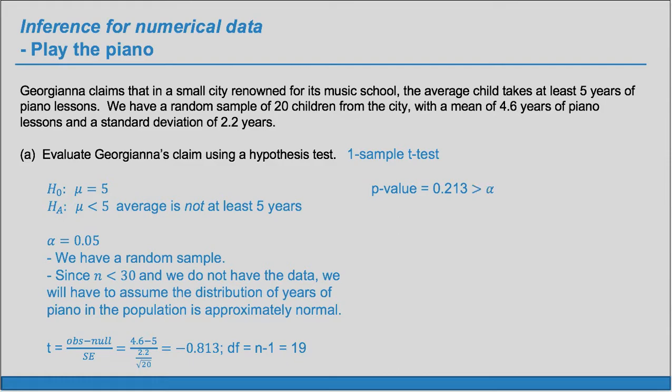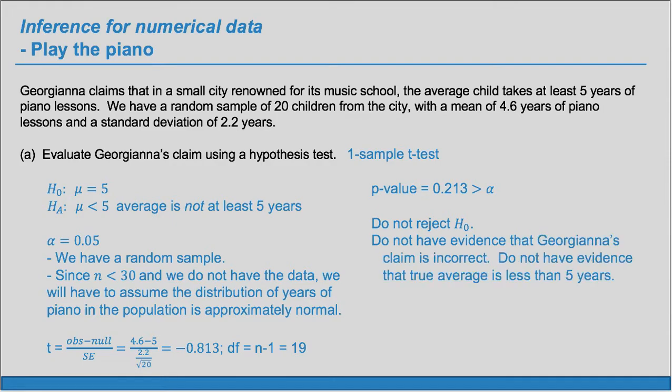This p-value of 0.213 is bigger than alpha, so we do not reject H₀. If we do not reject H₀, we do not have evidence for the alternate hypothesis. In context, we do not have evidence that Georgiana's claim is incorrect — we do not have evidence that the true average is less than five years.